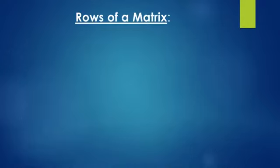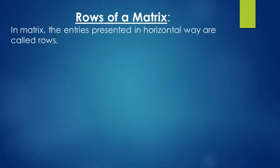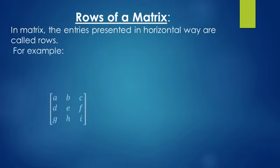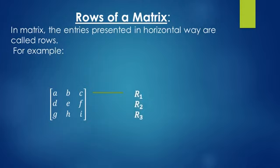Rows of a matrix: in a matrix, the entries presented in a horizontal way are called rows. For example, here we have a matrix with elements a, b, c, d, e, f, g, h, i. The row a, b, c is called Row 1; d, e, f is called Row 2; and g, h, i is called Row 3.